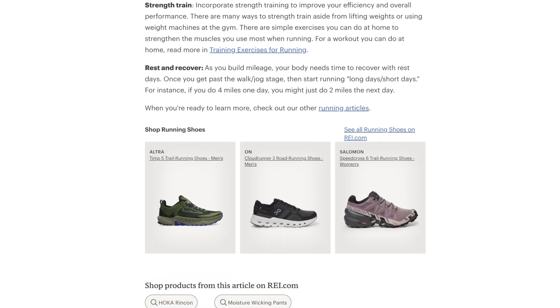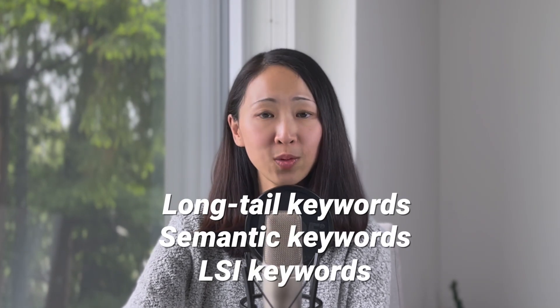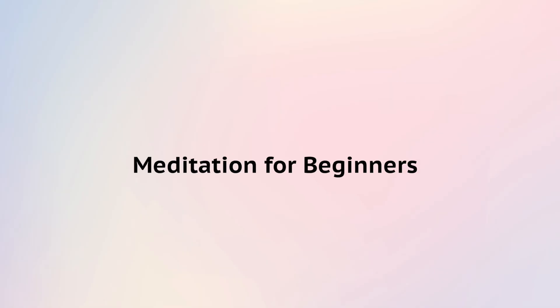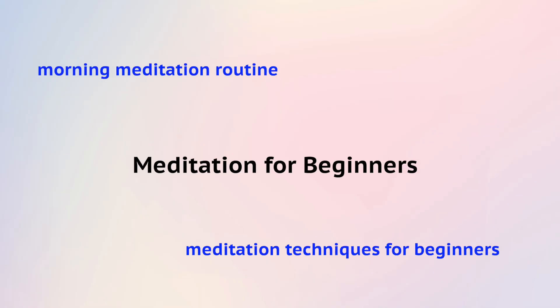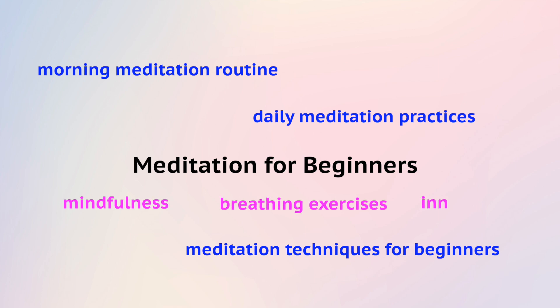Another tip is to improve contextual relevance. Future search is no longer simply about keyword matching — it's more about context that matches search intent. Use more long-tail keywords, semantic keywords, or LSI keywords that are conceptually relevant. For example, for content about meditation for beginners, long-tail keywords can be 'meditation techniques for beginners,' 'morning meditation routine,' or 'daily meditation practices,' while semantic or LSI keywords can be 'mindfulness,' 'breathing exercise,' 'inner peace,' and 'focus.'